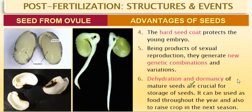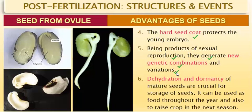The hard seed coat protects the young embryo. Being products of sexual reproduction, seeds generate new genetic combinations and variation — whether through natural or artificial hybridization. Seeds are always genetically recombinated, and their offspring may have characters different from their parents — either more advantageous or less, but always showing genetic differences.